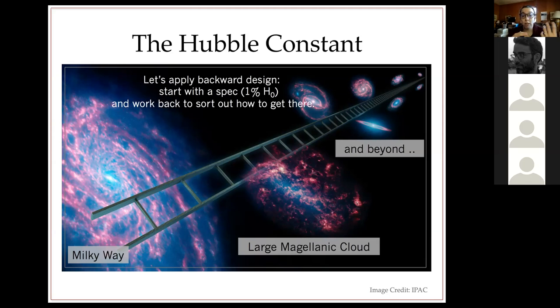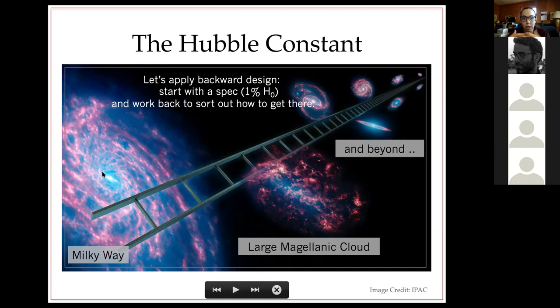One way I like to think about improving Hubble constant measurements is to apply something called backward design — any engineers in the audience will think about their problems this way. We start with a spec: measure the Hubble constant way out in the Hubble flow to some target precision, then work backwards to the Milky Way, asking not 'this is the best we can do' but 'how do we make this more precise to reach what we want to reach?'